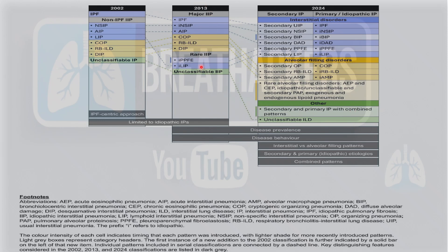There is color coding on this slide. The color intensity of each cell indicates the timing that each pattern was introduced — lighter shades are more recently introduced patterns compared to darker shades. The gray boxes are the category headers, and how each individual pattern came to be known in the serial classification is connected by dashed lines.